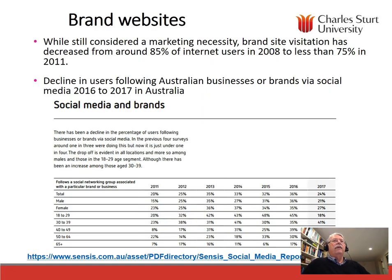Looking at brand websites: brands see website visitation as a marketing necessity. However, consumers are not spending as much time or visiting branded websites as much as they were in the past, and this has fallen. Looking at the latest study in Australia on the use of social media and brands, there's been a decline in the percentage of users following businesses or brands via social media between 2016 and 2017 — a significant decline, particularly in the male population in Australia, except in the 30-to-39 year age group, where access to social media websites actually increased from 35% to 41%. Most other areas have declined.